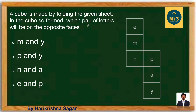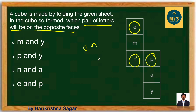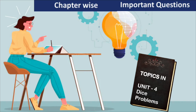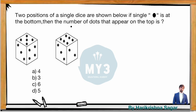Let's take one more question: a paper is given, fold it into a dice, and find the pairs of letters which are opposite faces. E and N are opposite, P and Y are opposite, and M and A are opposite. The question asks to pick the opposite pair — P and Y is the opposite pair.